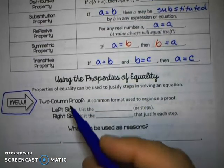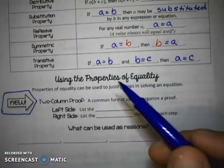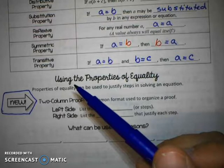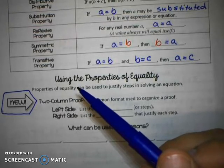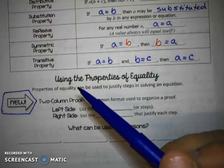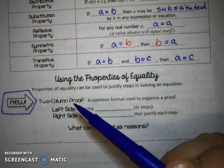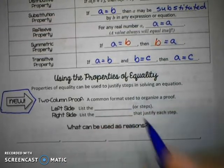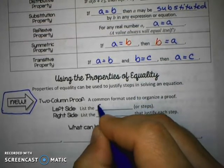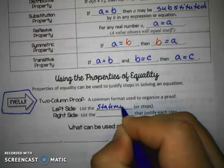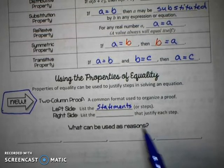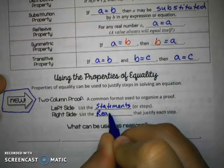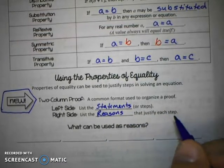And a proof is just a way that we can create an argument for why a certain equation works out to a certain answer or why a certain statement about geometric figures works out to its conclusion. And so, we're answering the question why when we do proofs with every step. The left side of our proof is going to list the statements or steps, and the right side is where we're going to list the reasons that justify each step.